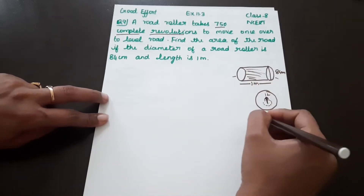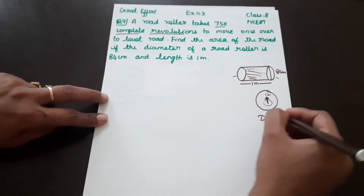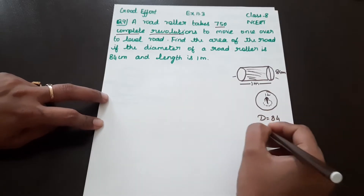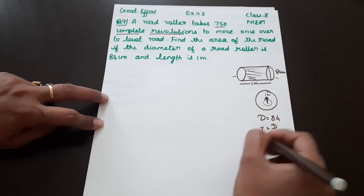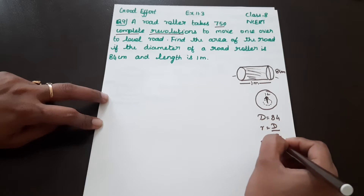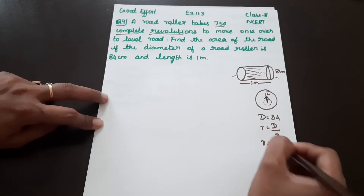Here we have the diameter. So we find R: R is equal to D divided by 2. R is equal to 84 divided by 2, which gives R equal to 42.